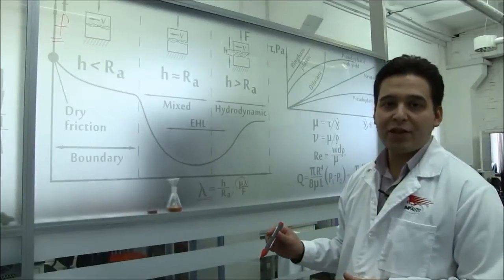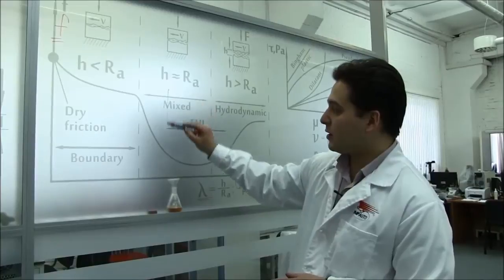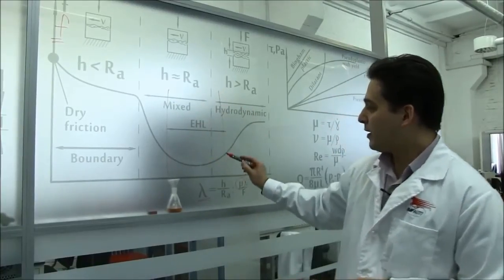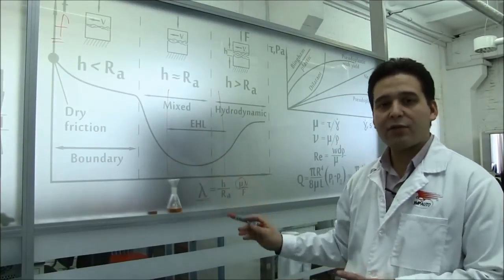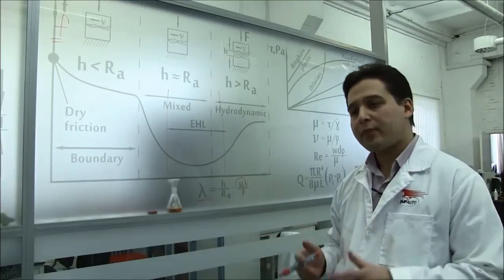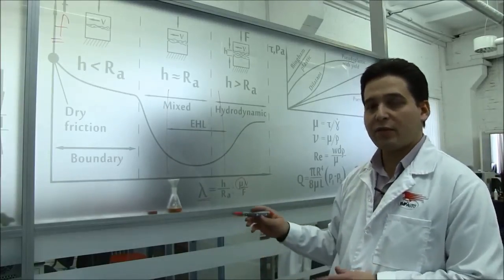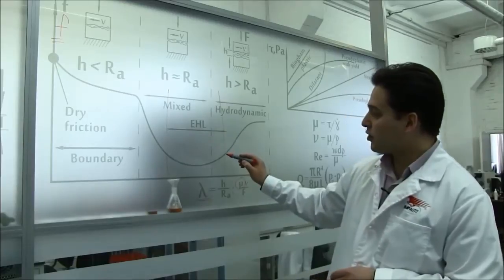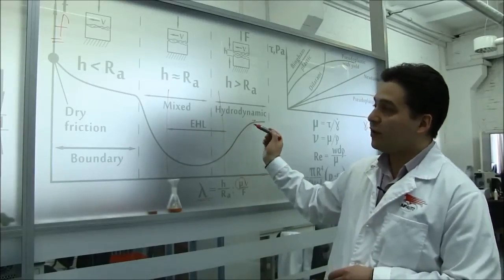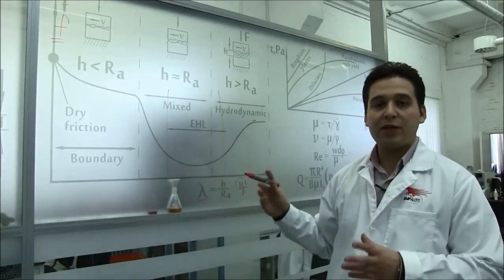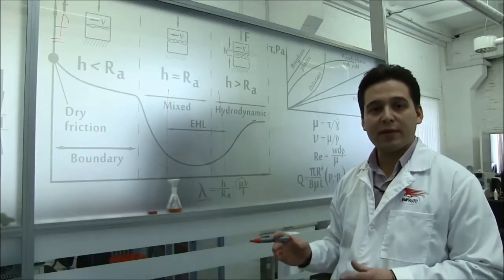The optimal figures of the HTHS are in this interval, where the friction coefficient is minimal. Let's imagine that the HTHS increases. As a result, the thickness of the oil layers increases either, as does the friction coefficient. Efficiency of the engine decreases because of friction losses.